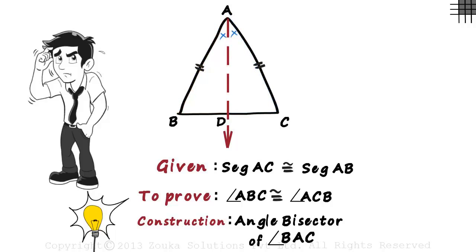If we somehow manage to prove that two sides and an included angle of triangle ABD are equal to the corresponding two sides and an included angle of triangle ACD, then we can say that the two triangles are congruent.